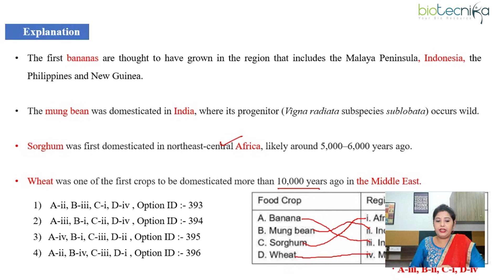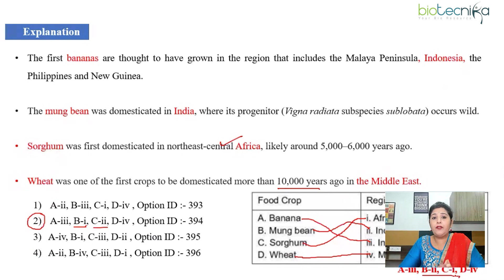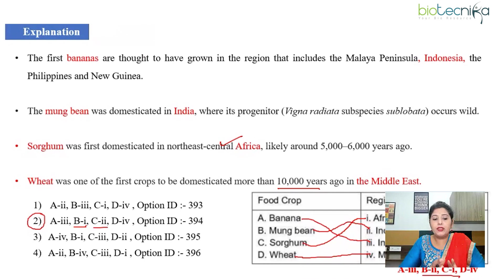Looking at the options, A3 — banana and Indonesia — is given in option 2. However, the B and C assignments in that option do not match the information from standard reference material. So basically, this question can be challenged because the answer given in the answer key is not entirely correct. You can challenge it, as the answer key lists option 2 but the B1 and C2 pairings are incorrect.